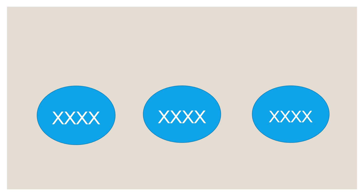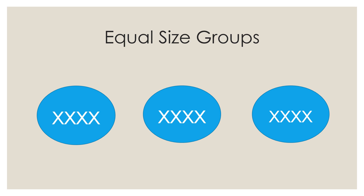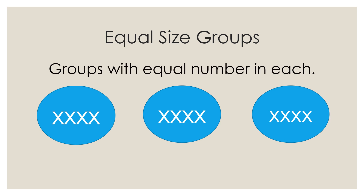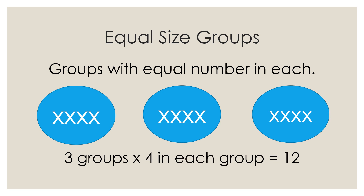Here we have three ovals and in each oval there are four x's. I am going to now show you my favorite, which is equal size groups — groups with equal number in each. Three groups times four in each group equals twelve. Three times four equals twelve.